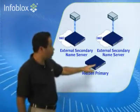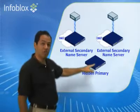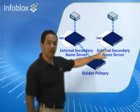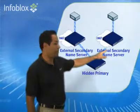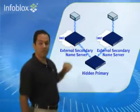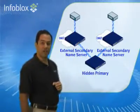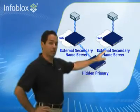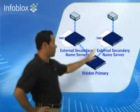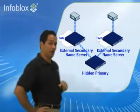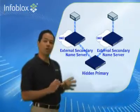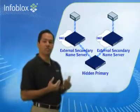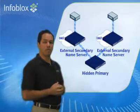The hidden primary is where you make changes to the external zone data, and then it propagates out to these two external secondaries to be queried by name servers out on the internet. These two external secondary name servers are directly exposed to the internet — they're out there on DMZ networks — so you want to take a lot of care to secure them and make sure that they're as resistant as possible to attack.